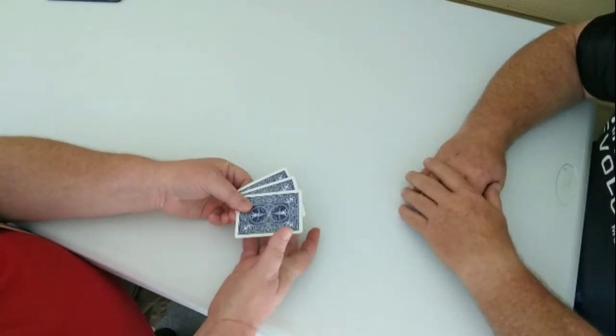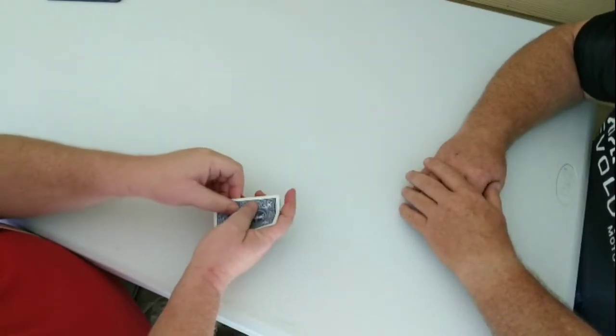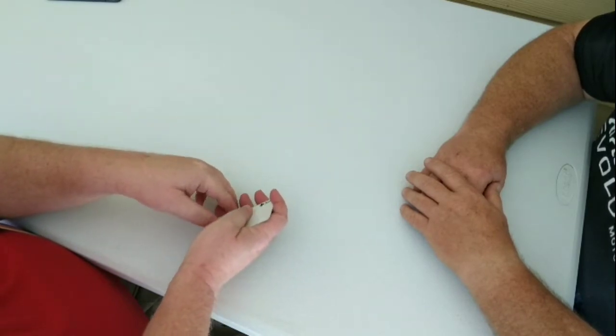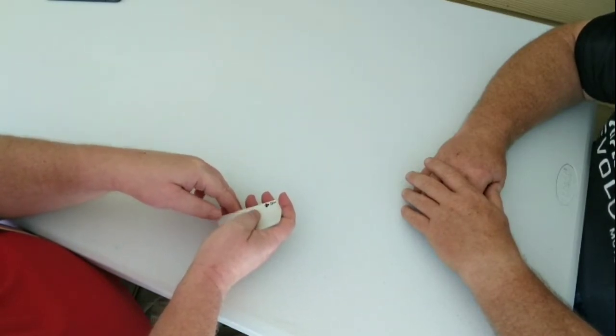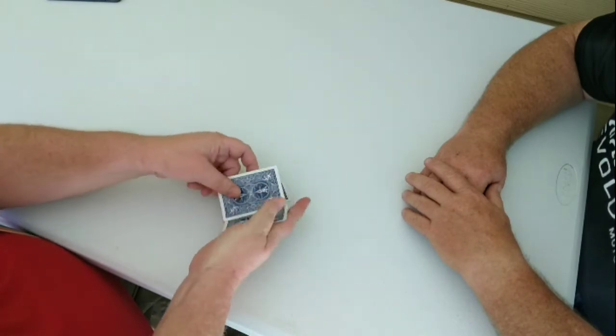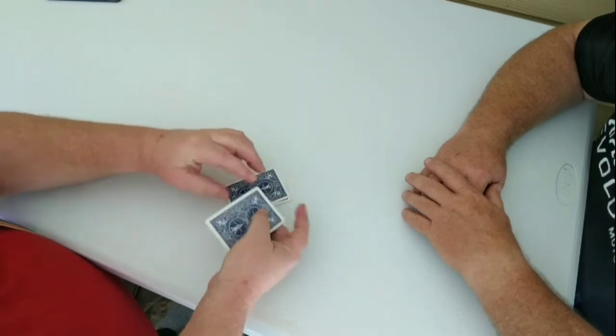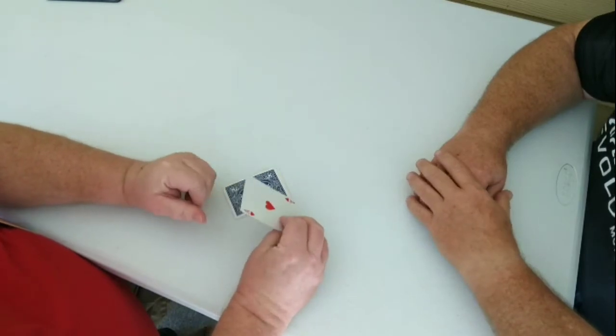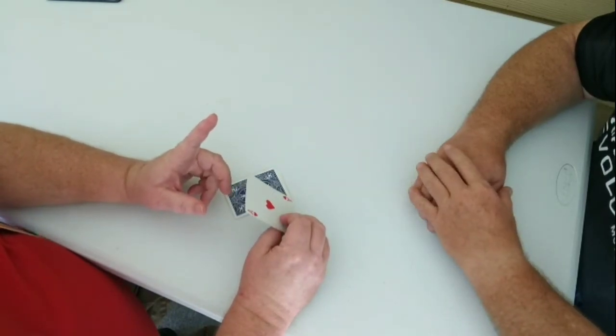So we got three cards. Now two of the cards are the same. We got two black aces and one red ace. Now this is the money card. That's the one you got to keep up with, trying to follow that one.